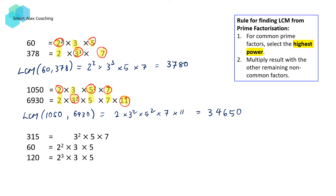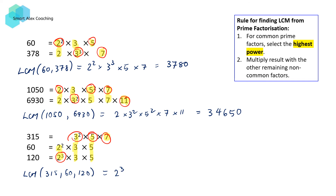For the last set, we've got 315, 60, and 120. Again, we're going to repeat the same process and identify the common prime factors. So here we've got 2, 3, and 5 as common factors. Then we select the one with the highest power: 2 cubed, 3 squared, and the 5s are all the same so just select one. In addition, we also need to take 7 as well. So the LCM of 315, 60, and 120 is equal to 2 cubed times 3 squared times 5 times 7, which computes to 2,520.